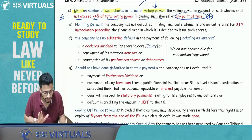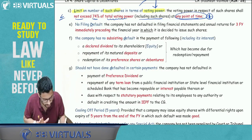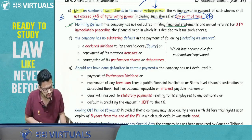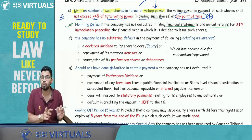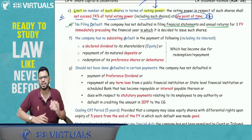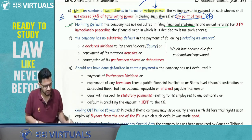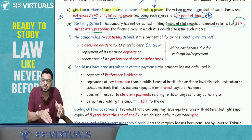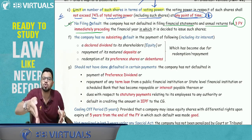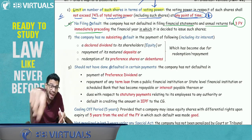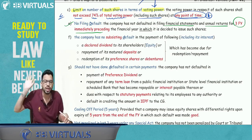Now three conditions relate to default. Condition 4 — No filing default: The company has not defaulted in filing financial statements (Section 137) and annual returns (Section 92) in the preceding 3 financial years — meaning the 3 years prior to the financial year in which you want to issue these equity shares with differential rights. Both financial statements and annual returns must have no default in those 3 years.